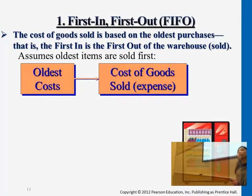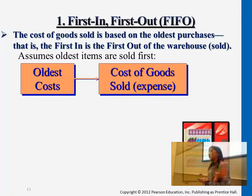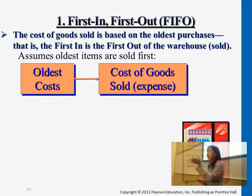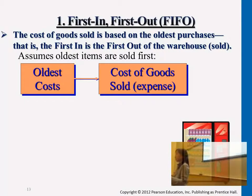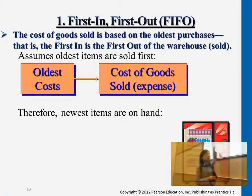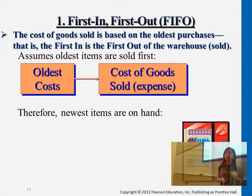That batch has, let's say, 1,000 bottles in it. Until I sold out those first 1,000 bottles, I would use 50 cents for each one. Starting from bottle 1,001, then I use 52 cents to assign that transaction. So the oldest cost — the 50-cent one — turns into cost of goods sold expense first.